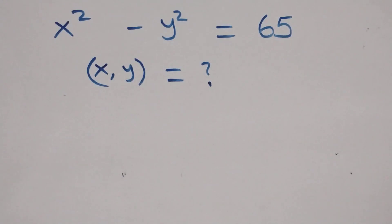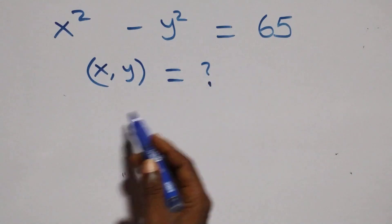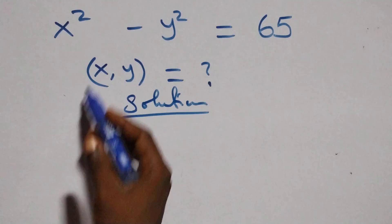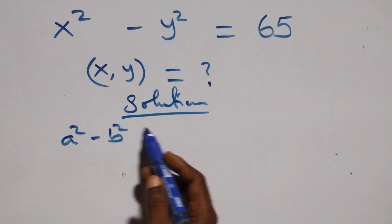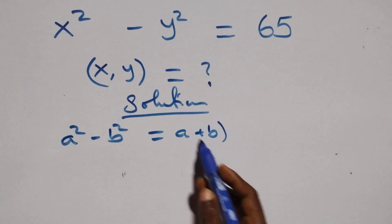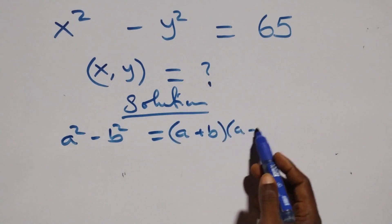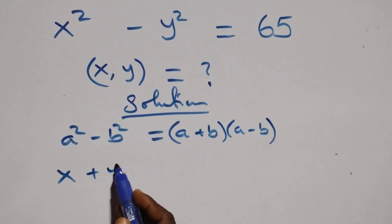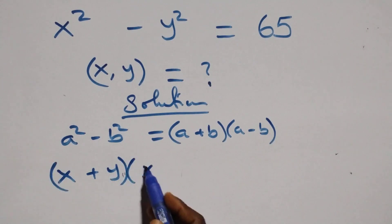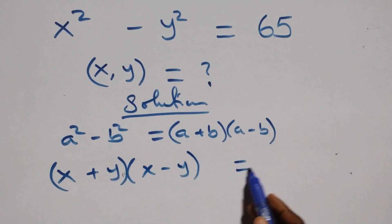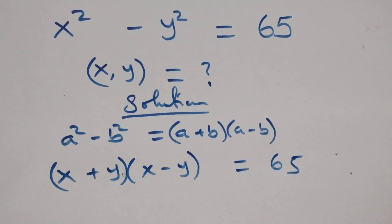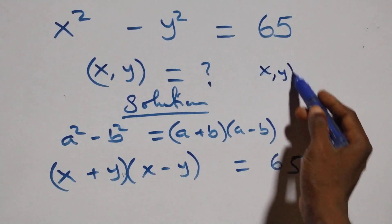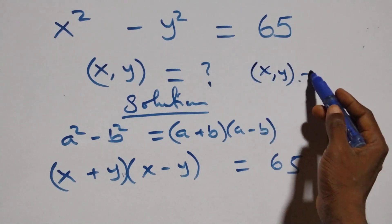Hello, you're welcome. How to solve this nice algebra equation. From here, what we have is a² minus b² which equals (a+b)(a-b). And here we have (x+y)(x-y) equals 65, where the value of x and y are members of the positive integers.